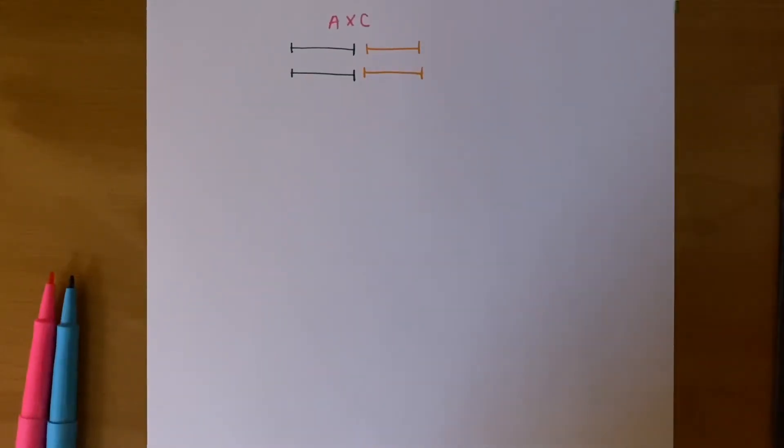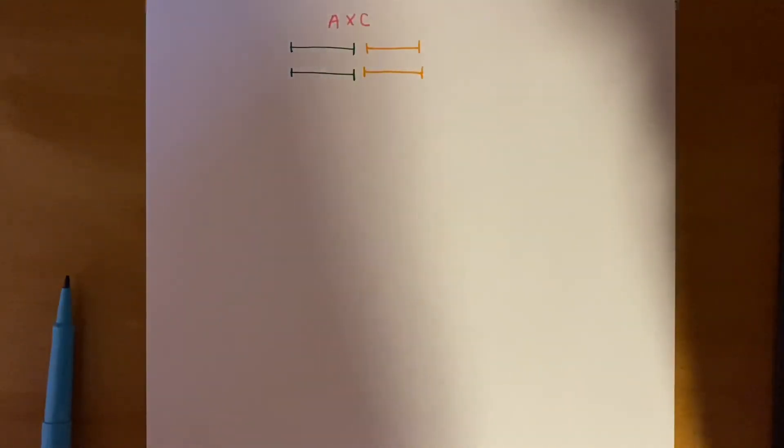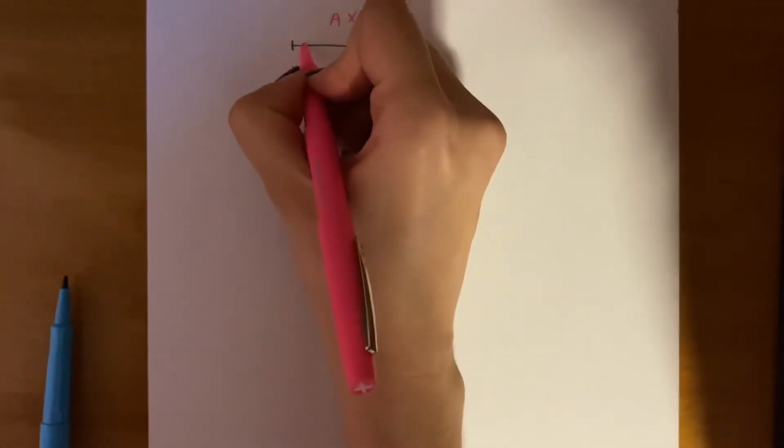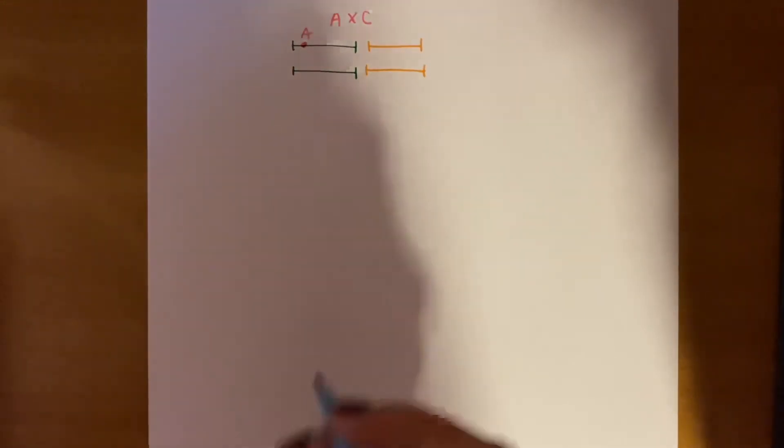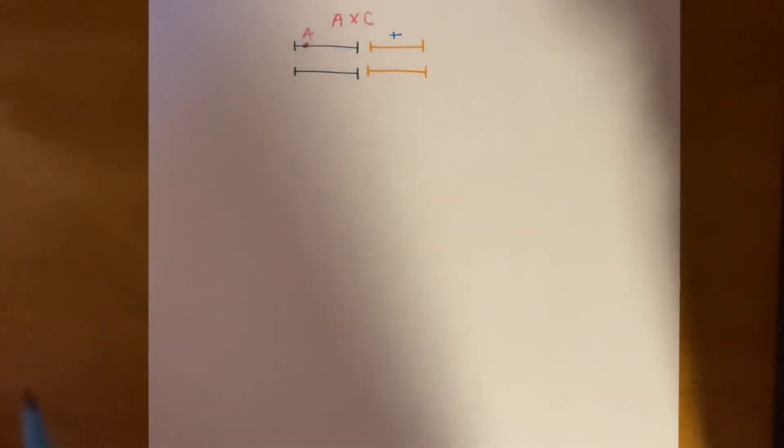Okay, so hopefully by now you've given A cross C a try on your own, and I'll be going over the answer. So, like we did before, we would take one allele from the W1 gene from A, which looks like this, and one allele from the W2 gene from A, which was the wild-type.